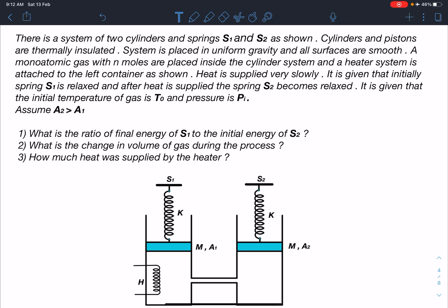You can assume A2 greater than A1 or A2 less than A1. We are going to discuss both cases here. Now you have to find out: What is the ratio of final energy of S1 to the initial energy of S2? What is the change in volume of the gas during the process? How much heat was supplied by the heater? If A2 is greater than A1, we will be getting that heat is actually taken by the heater. If you want to find out the heat supplied by the heater, the better assumption will be A2 less than A1.